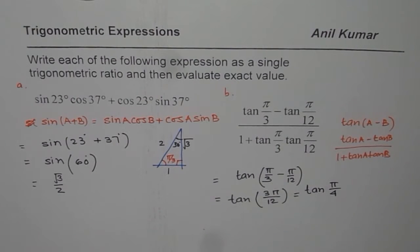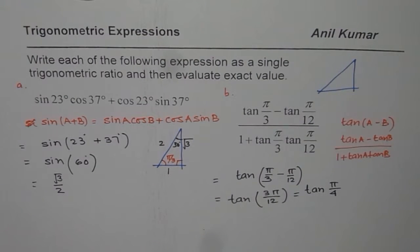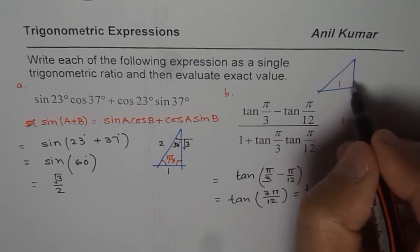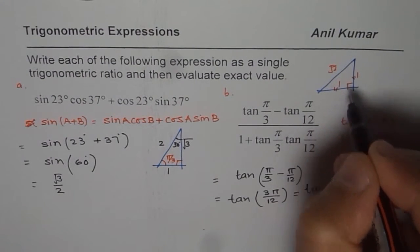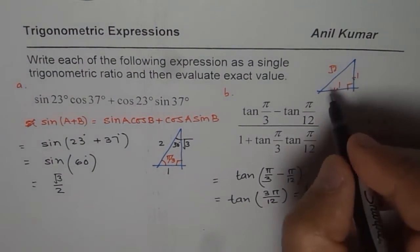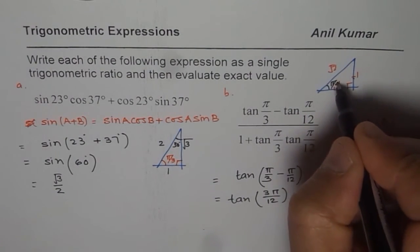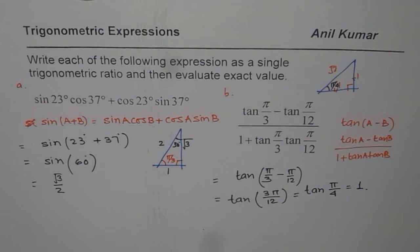And tan π/4, you can draw your special triangle for tan π/4. We know 1, 1, square root 2 is when these two sides are equal in a right triangle. So you get tan π/4 is equal to 1. So the value of this expression is 1. That is how you can solve these trigonometric expressions.